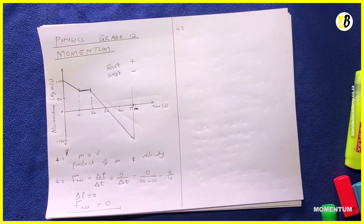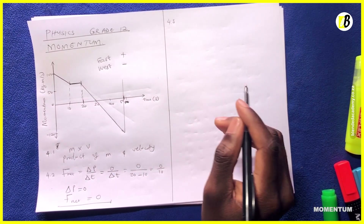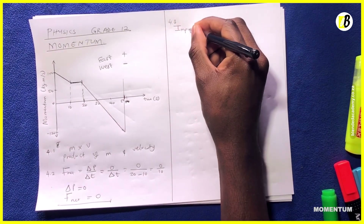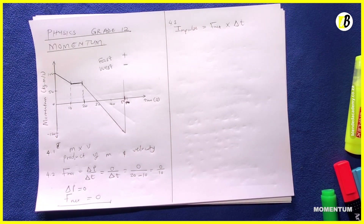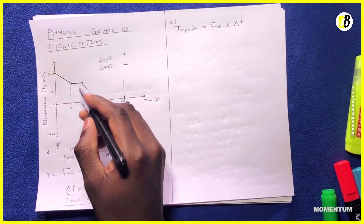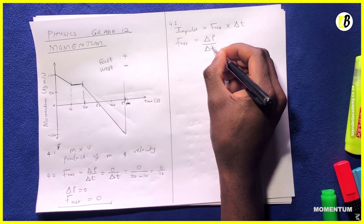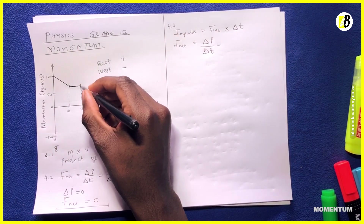The third question asks us to calculate the magnitude of the impulse that object A experiences between t20 seconds and t50 seconds. To get the impulse we go back to our definition: impulse equals net force multiplied by the change in time. First we need to find the net force between these two points: net force equals change in momentum divided by change in time, which is just the gradient between those two points.